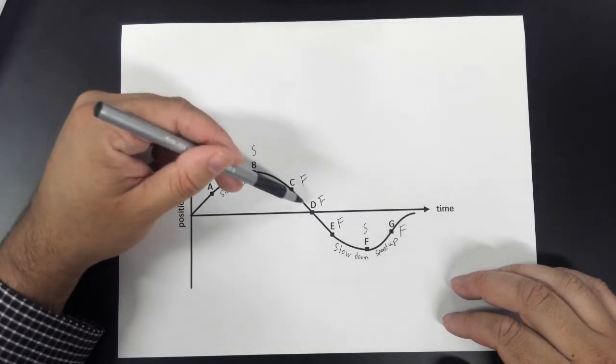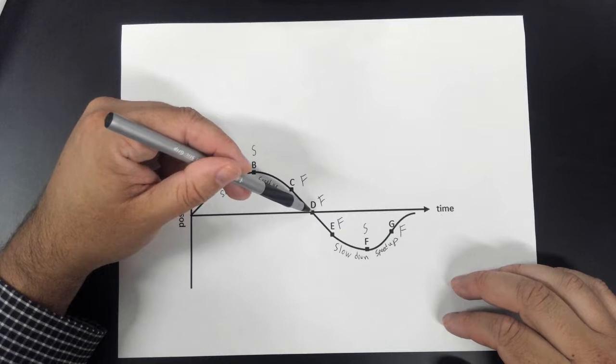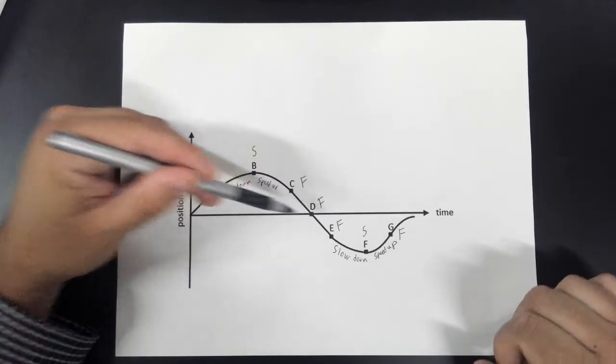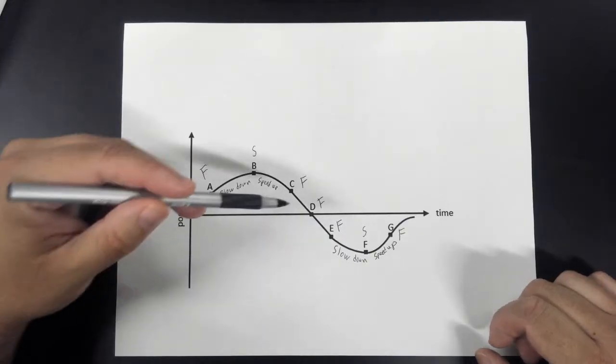At D, a lot of people want to say that at D it's changing direction. That would be true if this was velocity, but it's not. At this point, whatever line we're calling the zero line, whatever point we're calling zero, that object is going to move back towards it, pass it, and keep on going.